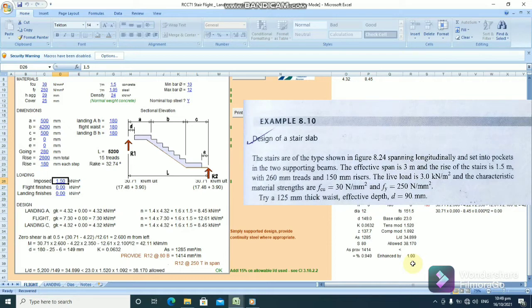And the characteristic material strength, fcu, is 30 newtons per millimeter squared and fy is 250 newtons per millimeter squared, meaning that that is a mild steel.